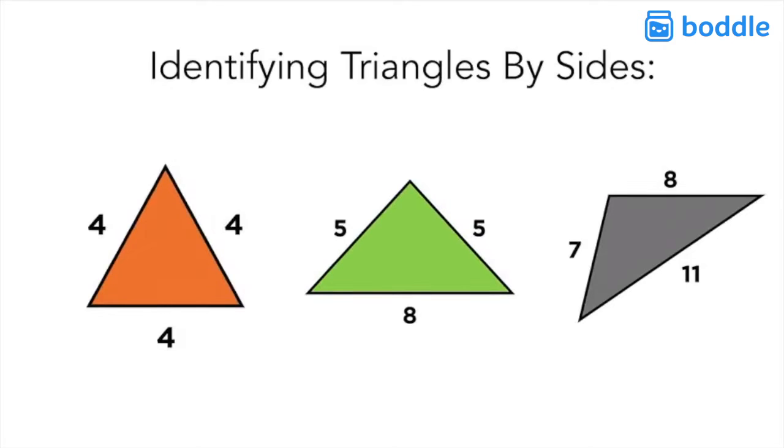Let's review the three different types of triangles that we have here on the screen. First we can take a look at our orange triangle and we notice that all three sides are equal to four.